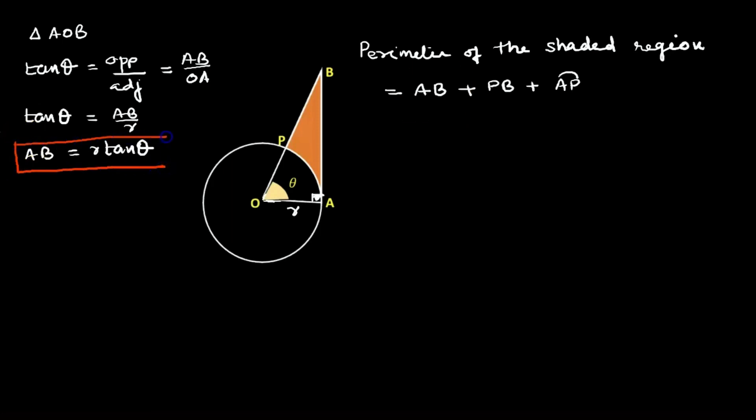Let's substitute this AB value: r tan θ plus PB. Now we have to find the length of PB. PB is part of the hypotenuse OB, so PB equals OB minus OP. OP is the radius, so PB equals OB minus r.